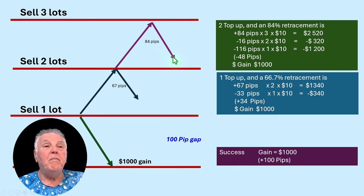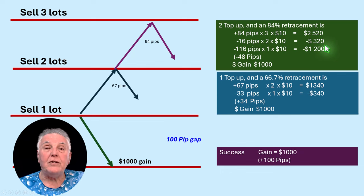But that deal at the middle level, the second trade, that was still negative by 16 pips. So 16 pips times two times $10 is minus $320.